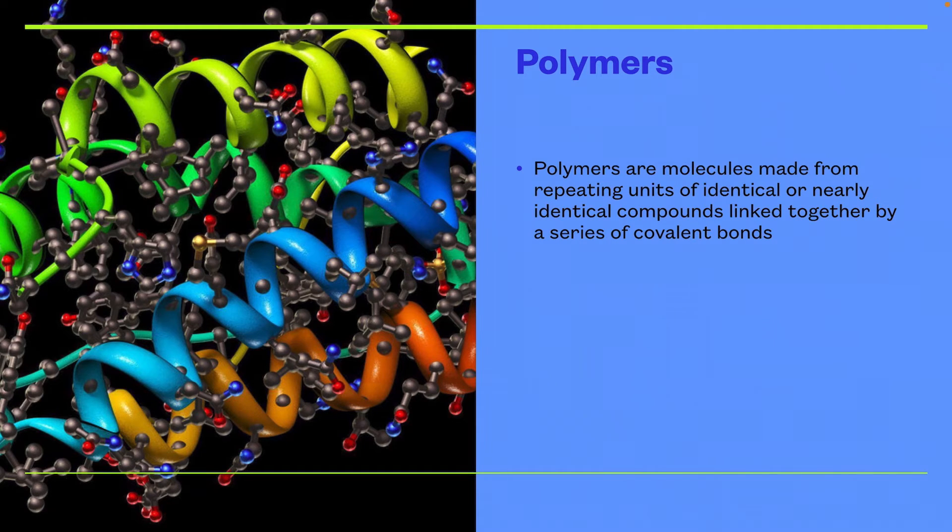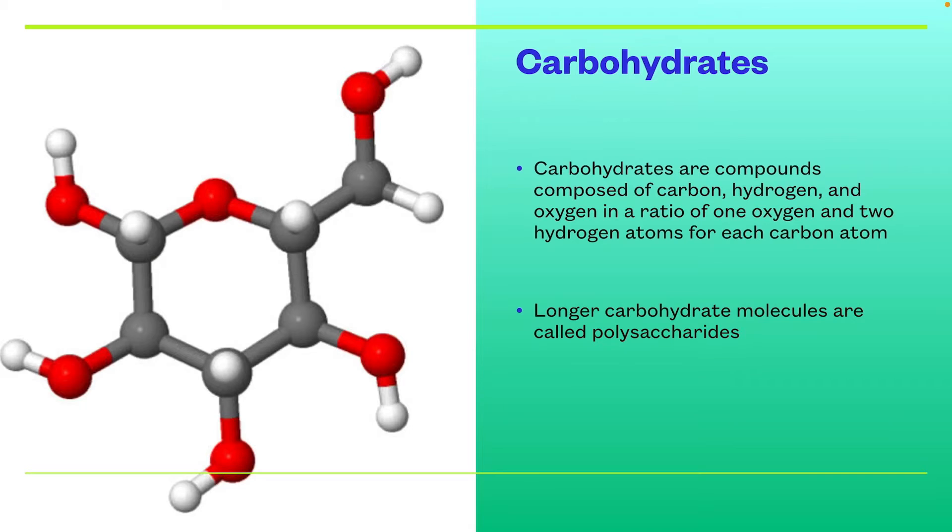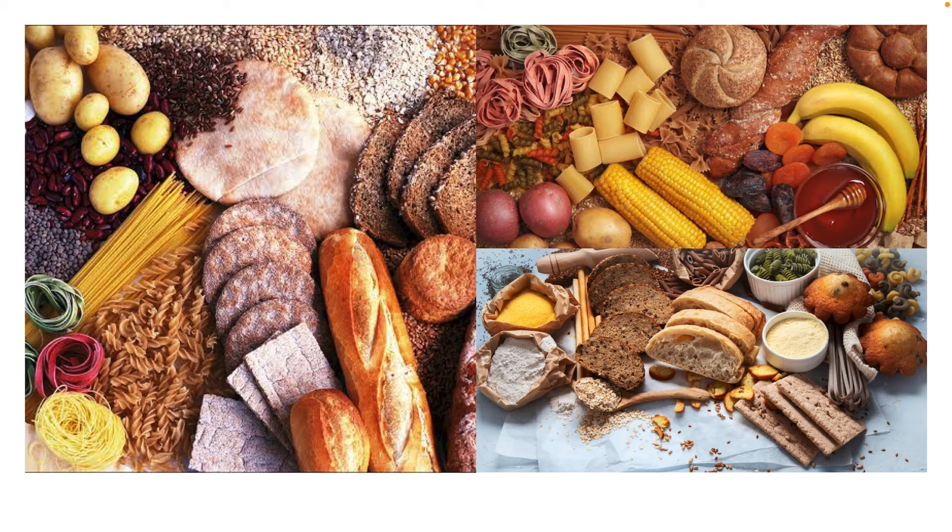Carbohydrates. Carbohydrates are compounds composed of carbon, hydrogen, and oxygen in a ratio of one oxygen and two hydrogen atoms for each carbon atom. Longer carbohydrate molecules are called polysaccharides. This is what carbohydrates look like in those atoms or compounds. And this is the type of foods that have carbohydrates: bread, rice, pasta, potatoes, muffins, and more. Sometimes even honey too, as you can see in one of the photos.